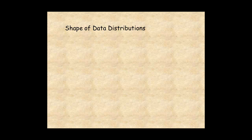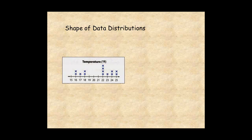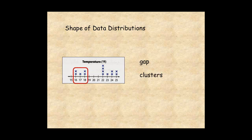For another example, this data set is not symmetric. There's a gap from 19 to 21. There are clusters from 16 to 18 and 22 to 25.